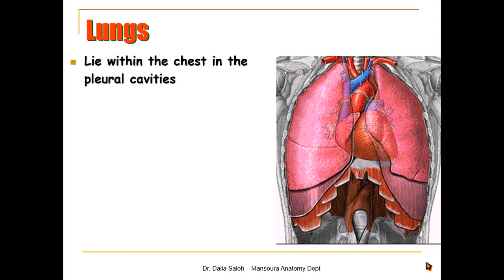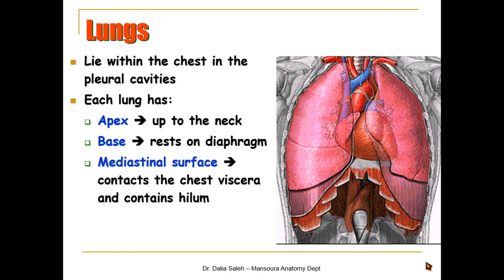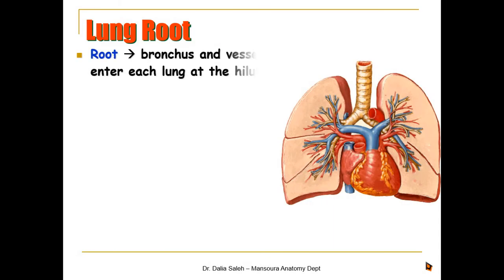The lungs lie within the chest in the pleural cavities. Each lung has an apex that extends up to the neck, a base which rests on the diaphragm, a mediastinal surface that faces the heart and structures of the neck, and a costal surface that faces the ribs.